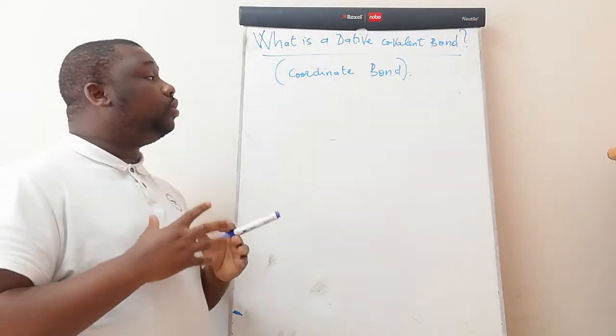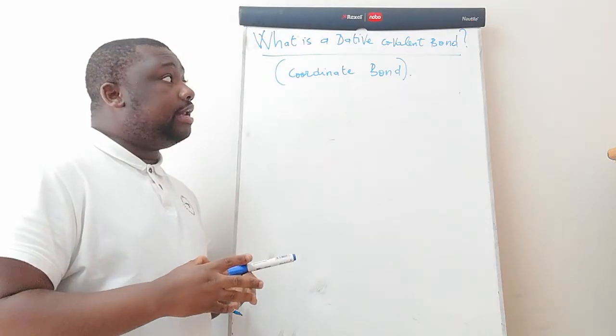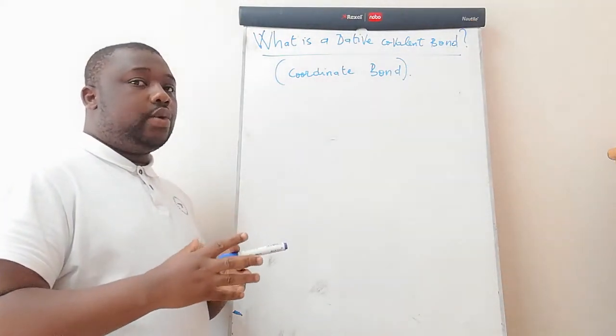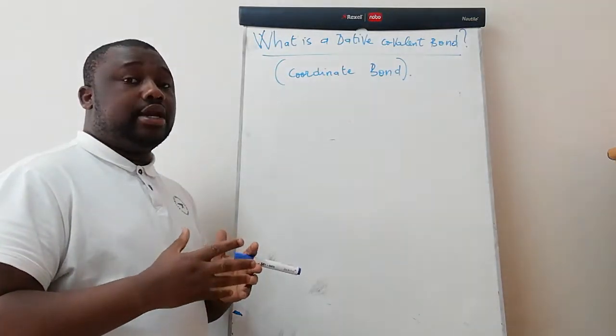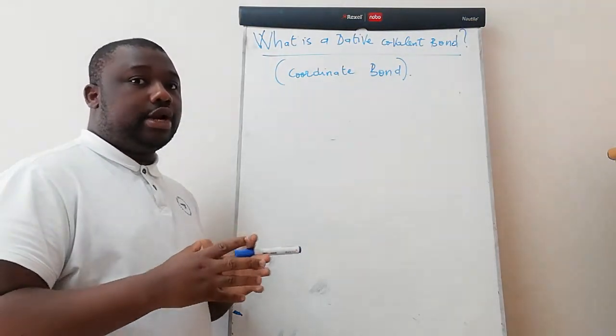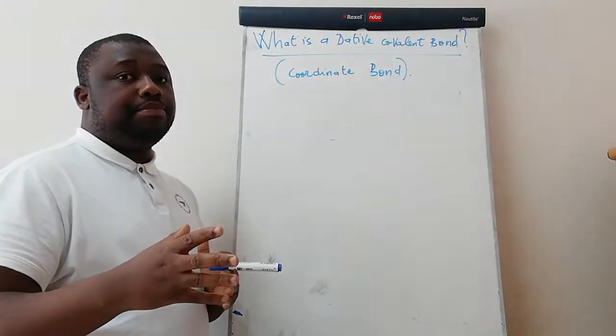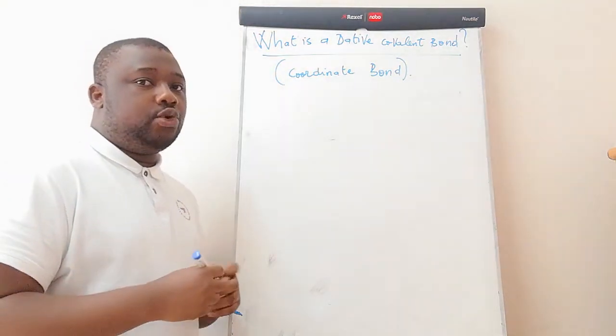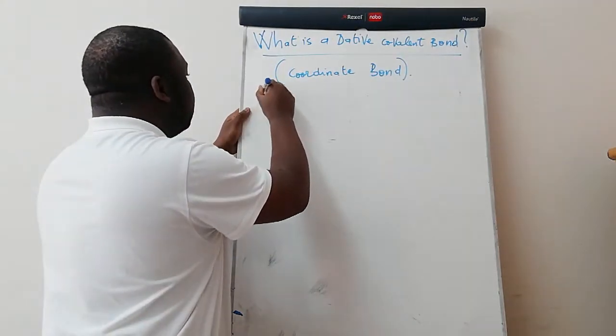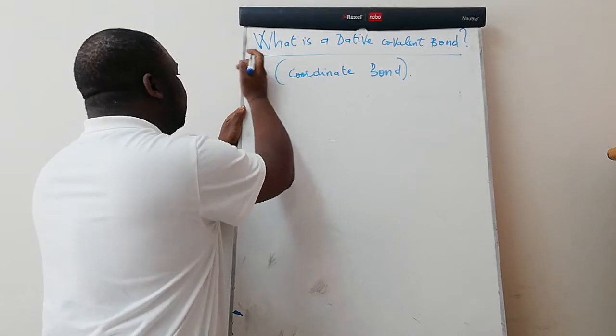So we're first going to define what is a dative covalent bond. Then from there, there is an illustration. I'm going to show you how a dative covalent bond can be made or formed from two different components. We're actually going to use ammonia and BF3, which is boron trifluoride. So here we go, let us define first. Definition and explanation.